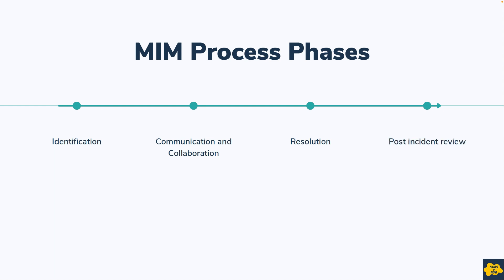The final phase of the major incident lifecycle is the post incident review, also known as PIR. Once the major incident is resolved, a PIR is started. The purpose of PIR is to analyze the incident, understand what can be done to prevent a similar type of incident in the future, and identify areas for improvement. A post incident report can be created when an incident is resolved and shared with all relevant stakeholders associated with that major incident.